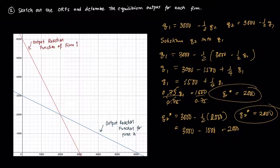We can verify this using the graph: the intersection of the two output reaction functions is the Cournot equilibrium, and it does occur at (2000, 2000). That's a simple exercise on solving for the Cournot equilibrium output in a Cournot duopoly using calculus. In the next video we'll start our discussions on the Bertrand model. Thank you for your attention.